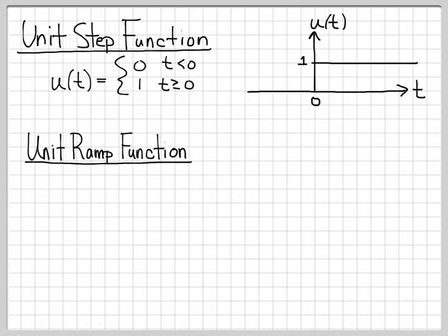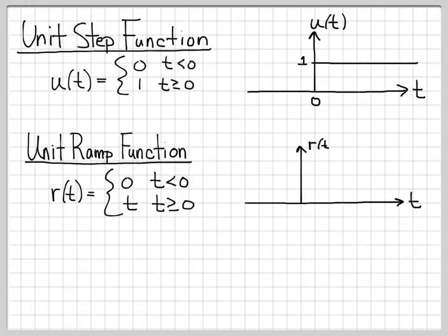What about the unit ramp function? The unit ramp function uses the notation r(t). r(t) is equal to 0 for all time less than 0, and r(t) is equal to t for time greater than 0. If we plotted this as a function of time, it looks like a line with a linear slope of 1 that is increasing starting at time 0, and it increases with slope 1 for all time — that's why it's equal to t.